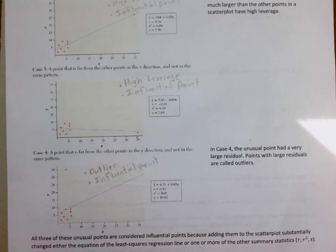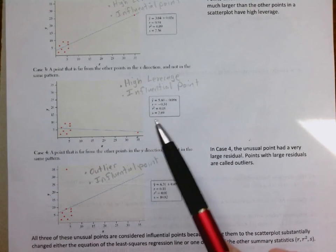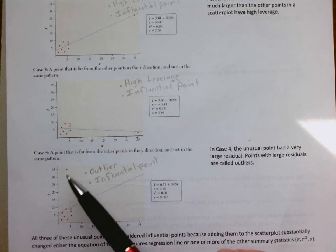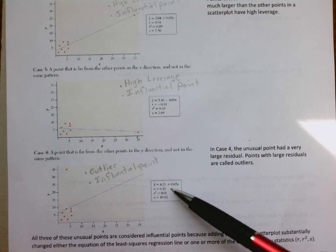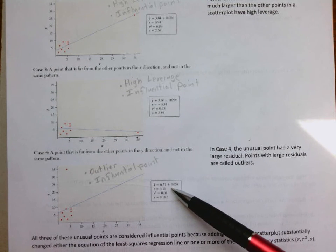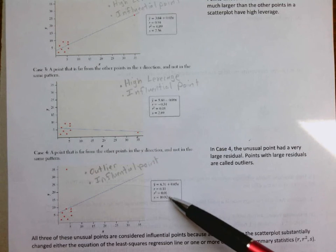Last case, Case 4. This one, instead of being far away in the x direction, is far away in the y direction. It has a normal x value like we might expect, but it's much farther away in y. There's a fairly substantial change in R from Case 1, a substantial change in R squared, and a much more substantial change in S.